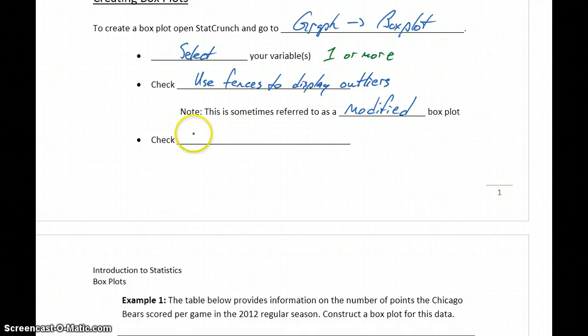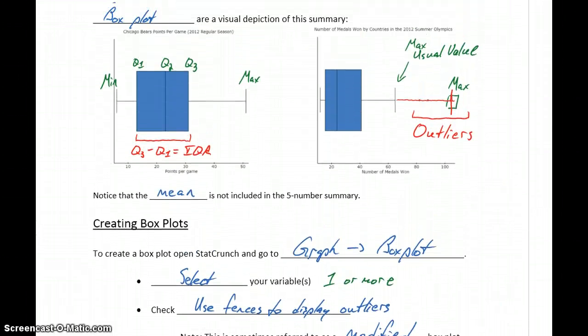And then another box which is optional, you can check draw boxes horizontally. By default StatCrunch will output these graphs in a vertical orientation, so they'd be directed up and down.